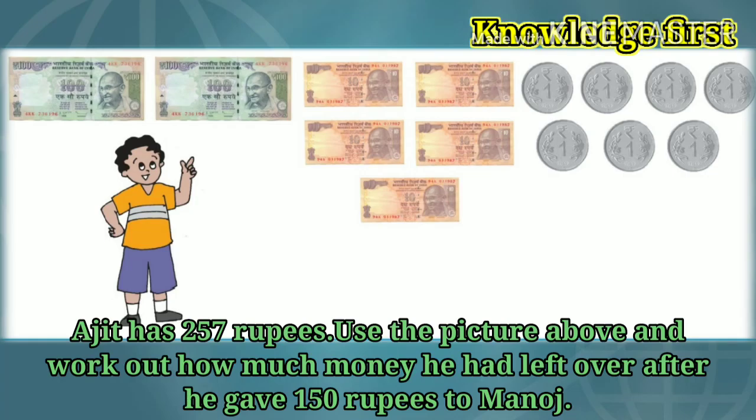Ajit has 257 rupees. Use the picture above and work out how much money he had left over after he gave 150 rupees to Manoj.